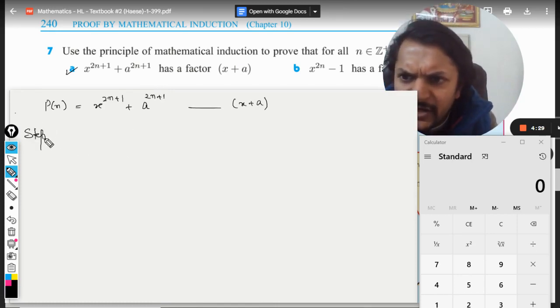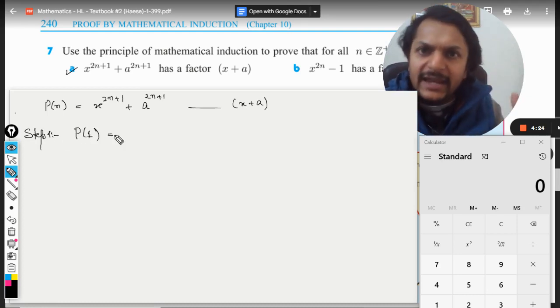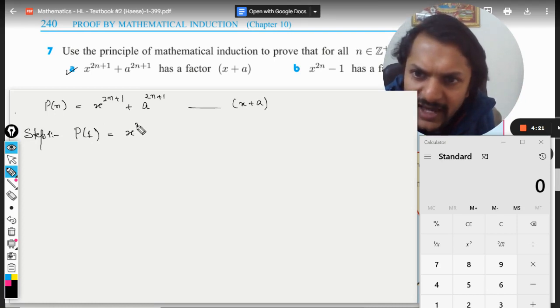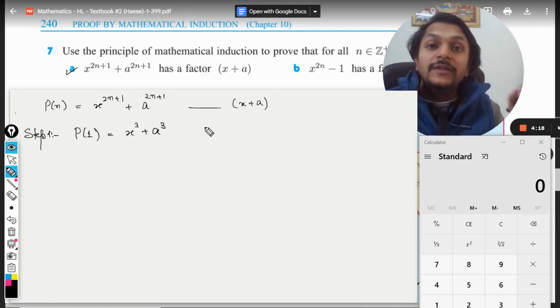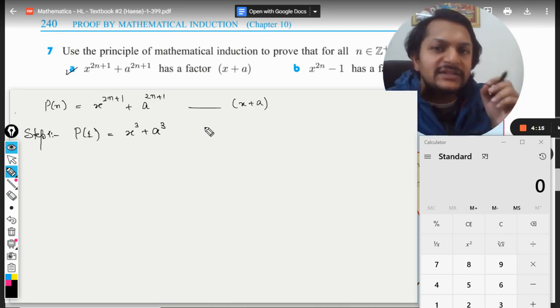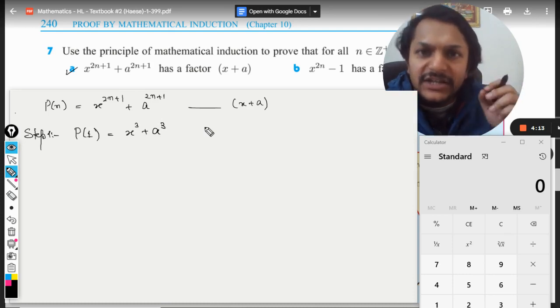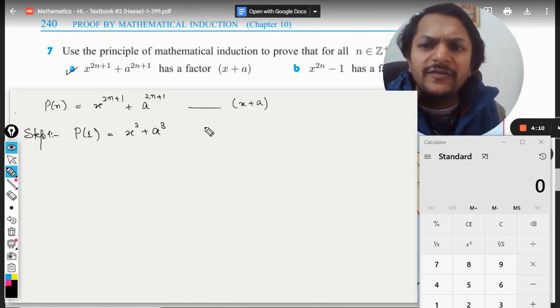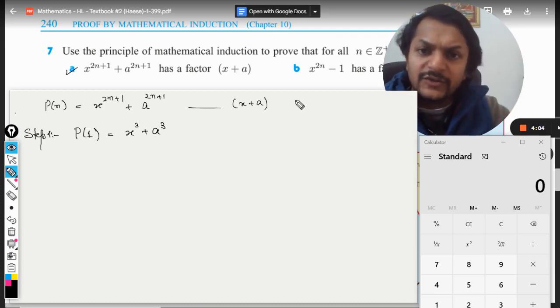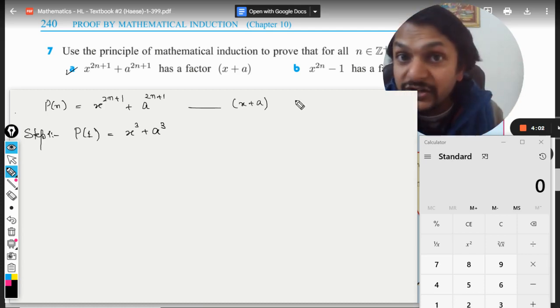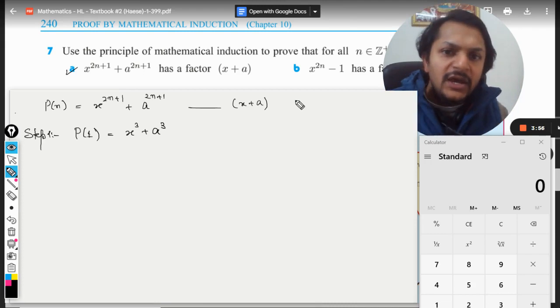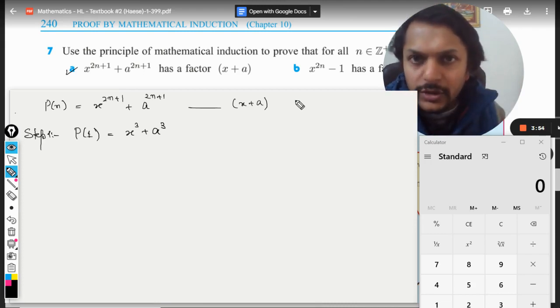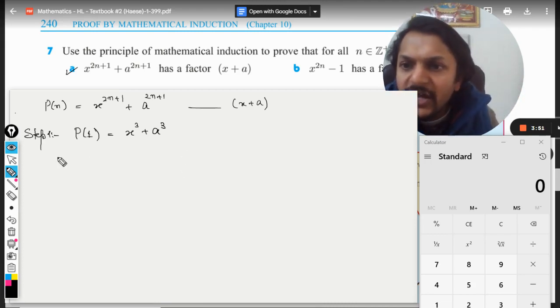First of all, as we know by step number one, we substitute n equal to 1. We get x raised to power 3 plus a raised to power 3. The proposal is that x³ + a³ is divisible by x+a, and we know this is divisible by x+a. If we know the binomial expansion, we can create the expansion, or you can go for long division method also. You can prove it that yes, it is divisible by x+a. Let us move to step number two.